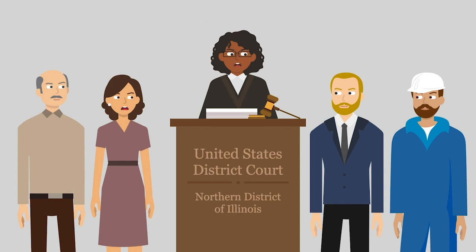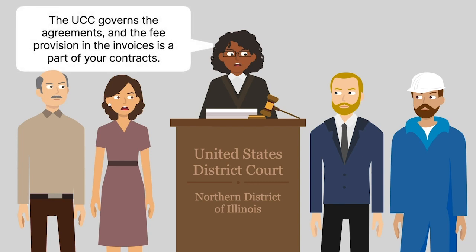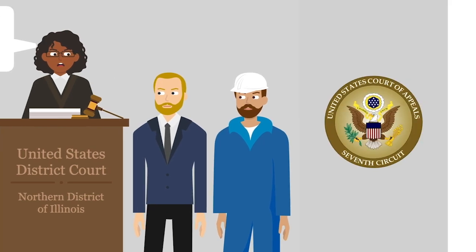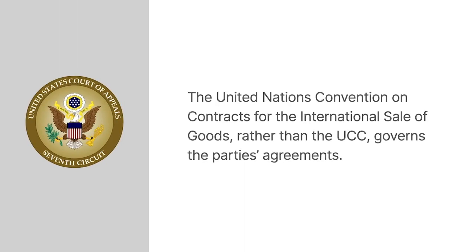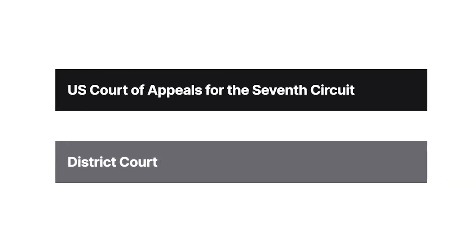The district court originally found that the Uniform Commercial Code, or UCC, governed the party's agreements and that the fee provision in VLM's trailing invoices was part of their contracts. The Seventh Circuit reversed and held that the United Nations Convention on Contracts for the International Sale of Goods, rather than the UCC, governed the party's agreements.